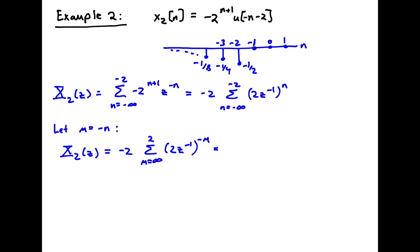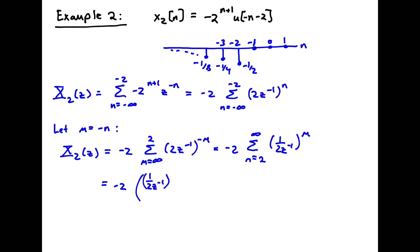I can reverse the order of summation. So I have minus 2 times the sum from m equal 2 to infinity, and pulling the minus 1 inside the brackets gives (1 over 2z^(-1))^m. This is now in the standard form of a geometric series, so we can apply the usual formulas. This gives minus 2 times [ (1/2z^(-1))^2 minus (1/2z^(-1))^(infinity+1) ] over 1 minus (1/2z^(-1)).